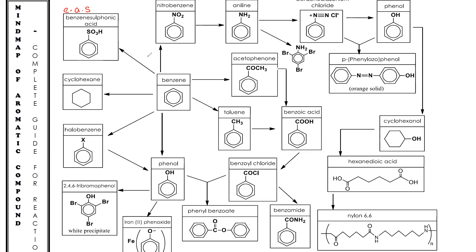We start from benzene to become cyclohexane. For benzene to become cyclohexane, you must have hydrogen with nickel catalyst, and you must have both high temperature and high pressure. STPM will usually give you the right conditions, but if only high temperature without high pressure, you still cannot convert benzene to cyclohexane. Both temperature and pressure must be high.